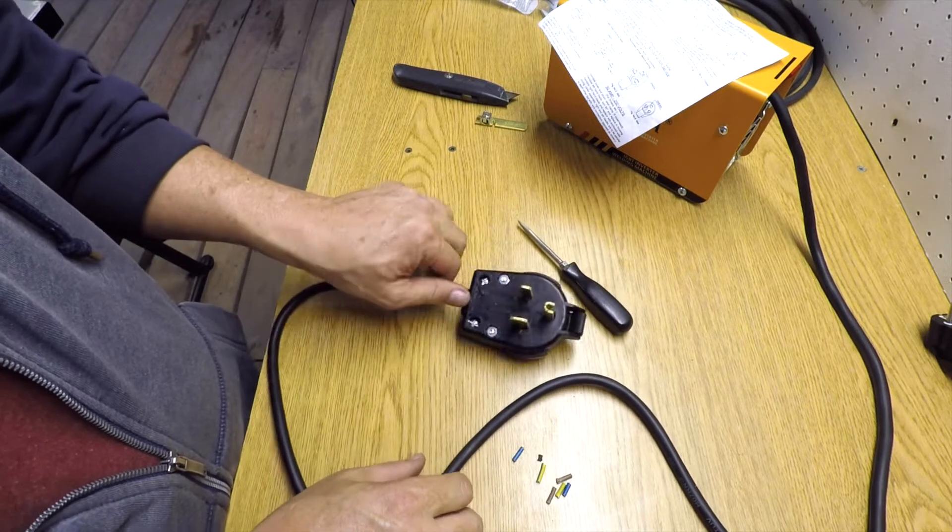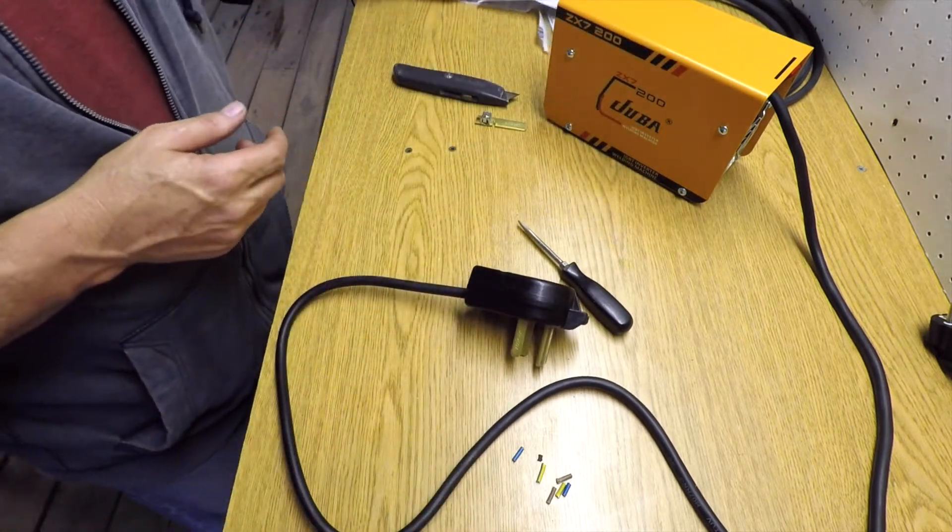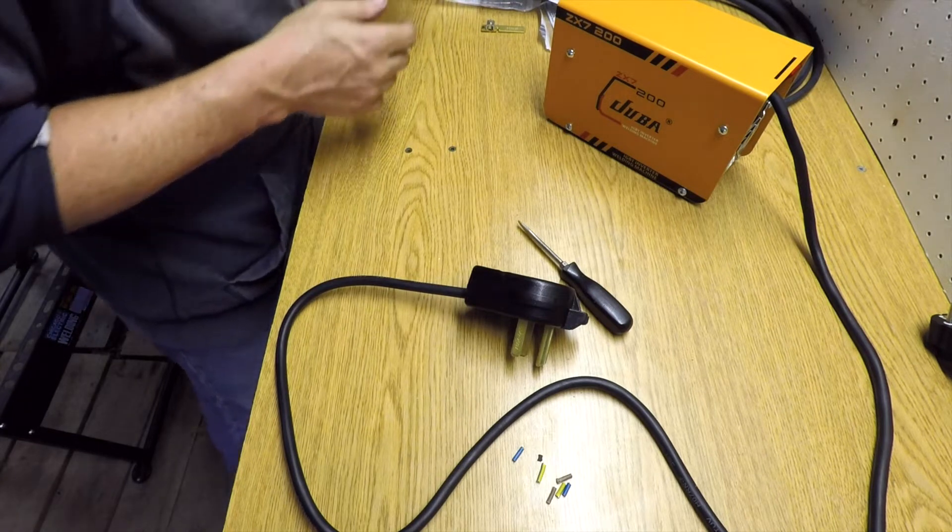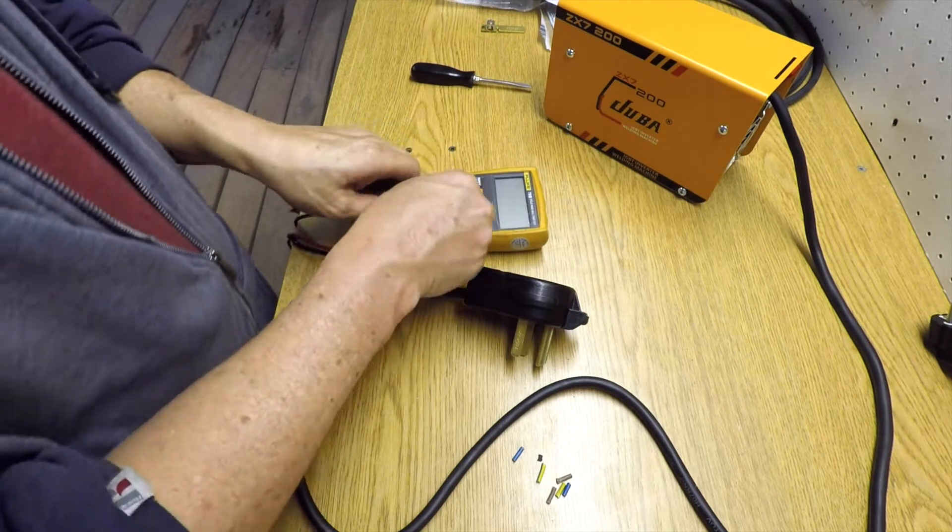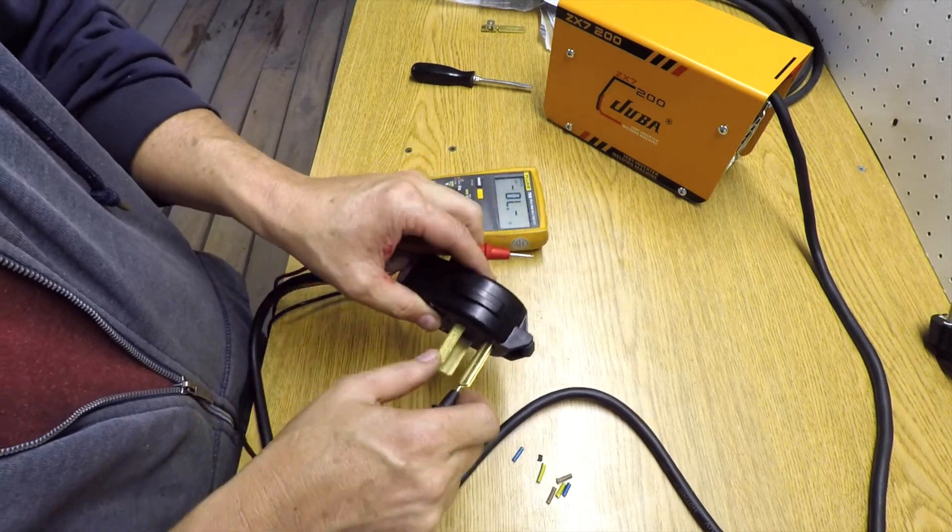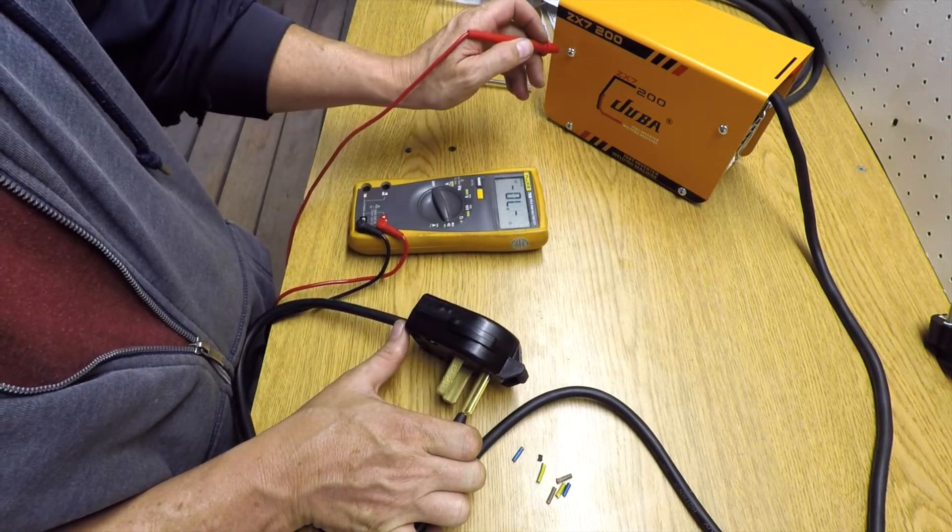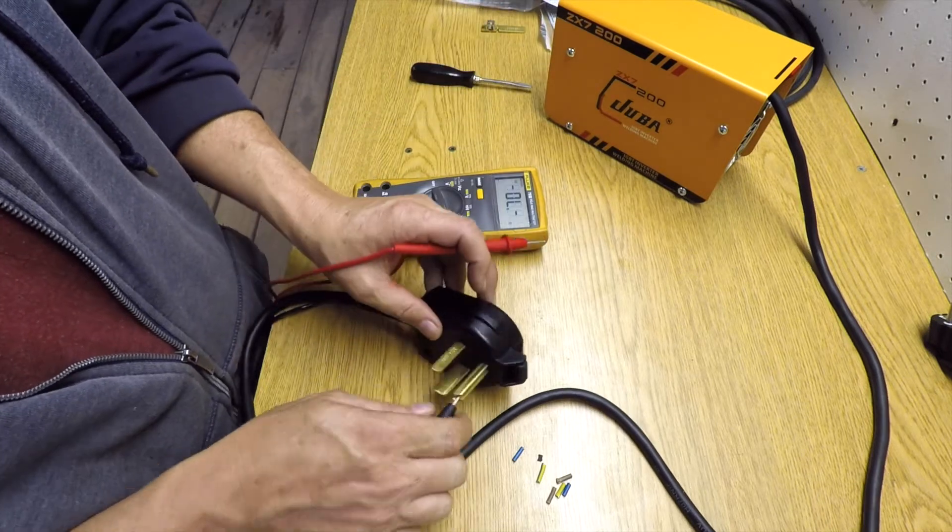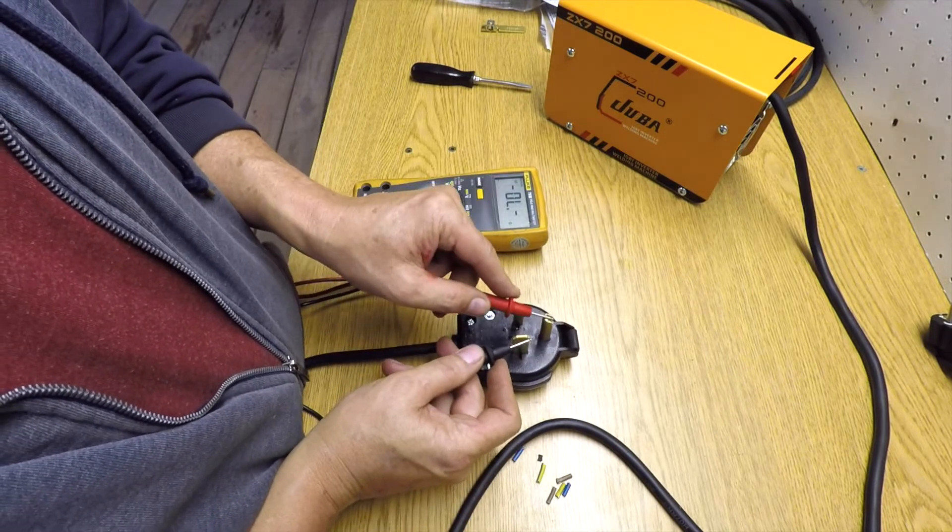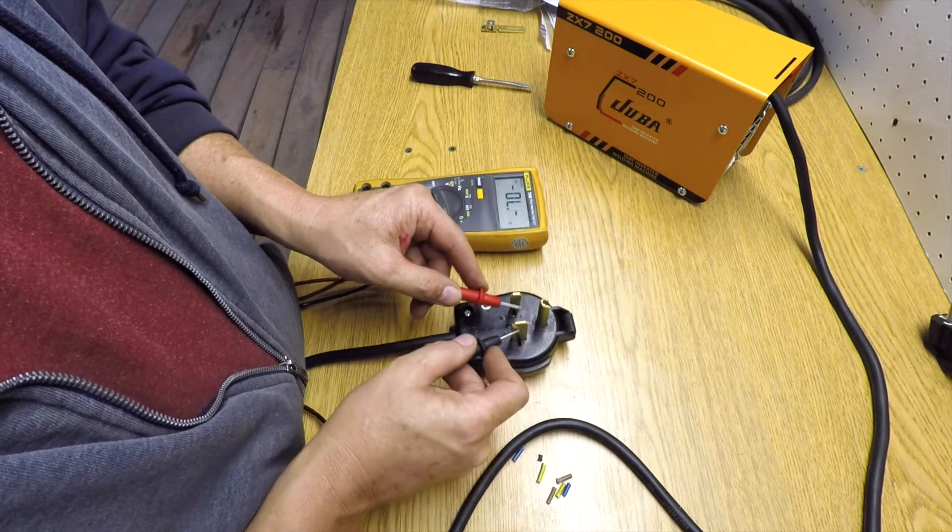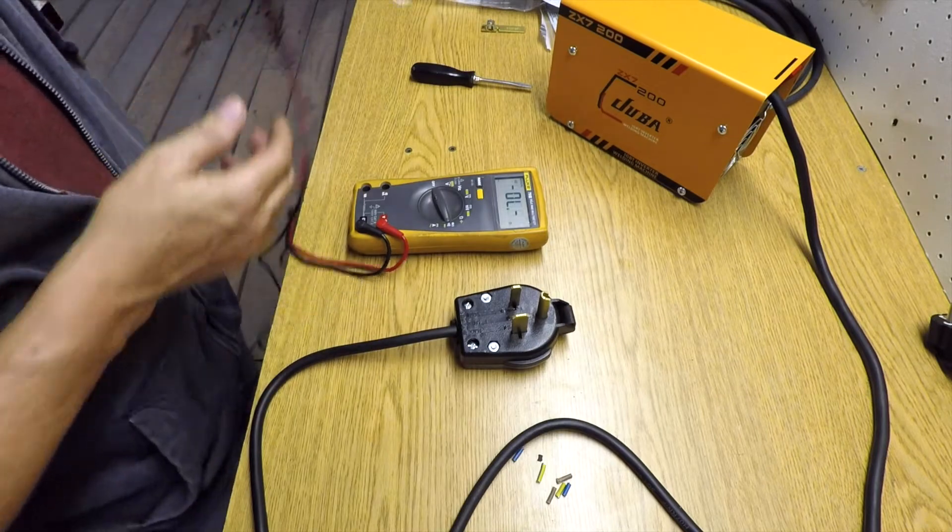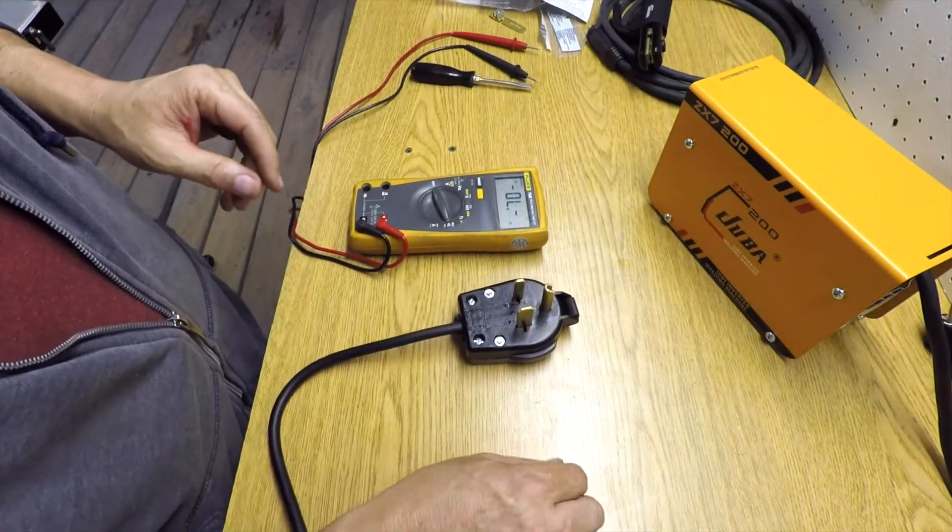Now I've got the proper plug end on here. Let's do one last test here with the meter. The only one that matters is to make sure that I have the actual ground on the proper one. This top one is the ground. These two powers are separate, so there should be nothing there, and there should be nothing between either one of these. That's what we want. The welder is wired up. I've got a plug on it.